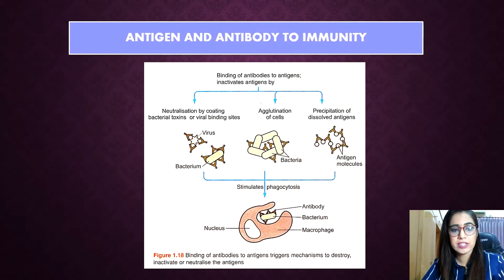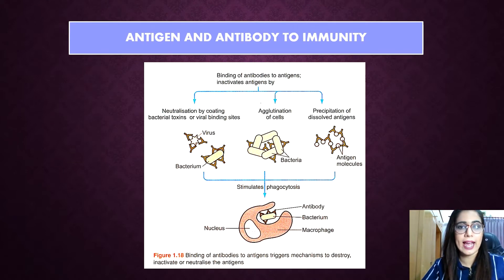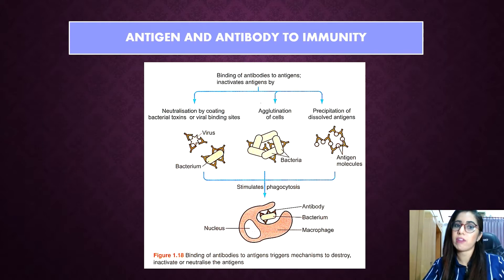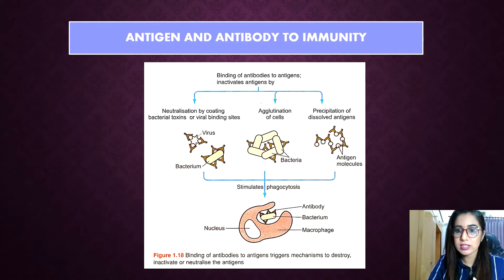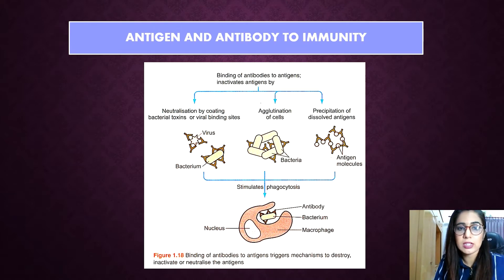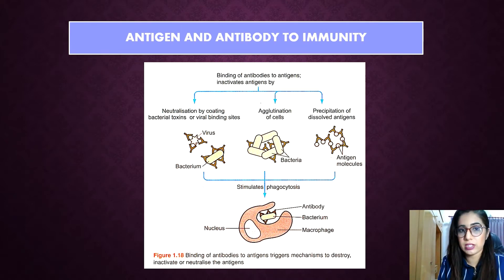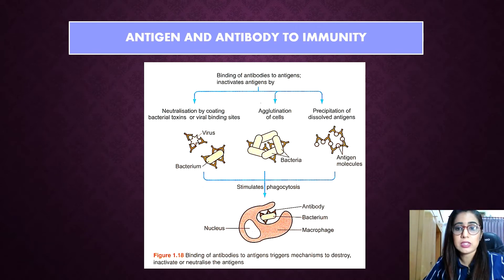There are several ways antibodies act through specific antibody properties to protect the body from foreign antigens. The five defenses are neutralization, agglutination, precipitation, opsonization, and lysis. This is the antigen-antibody immunity concept.